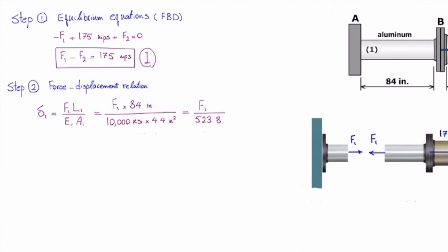Similar to that, I will do the same for delta two. Let's plug the values, and that gives us F2 times 144 divided by 30,000 ksi times 5.6. And that would be F2 divided by 1166.7.